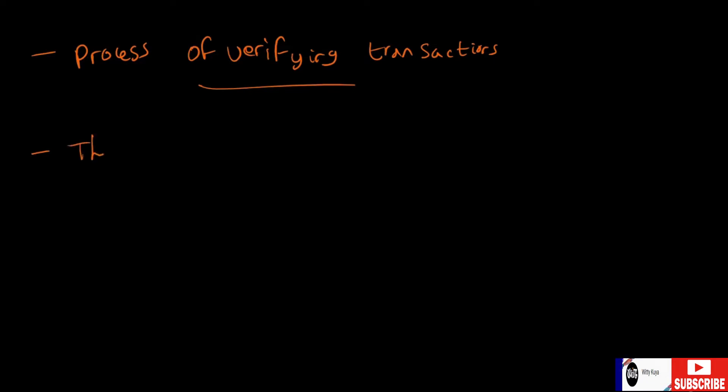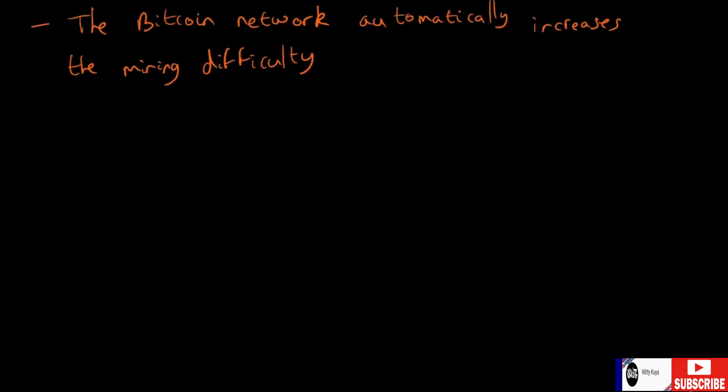And also as you know, the Bitcoin network automatically increases the mining difficulty depending on how often it is occurring and how often coins are being produced. It just ensures that not too many coins get produced at any given time. So it's getting more and more difficult, we already know that.